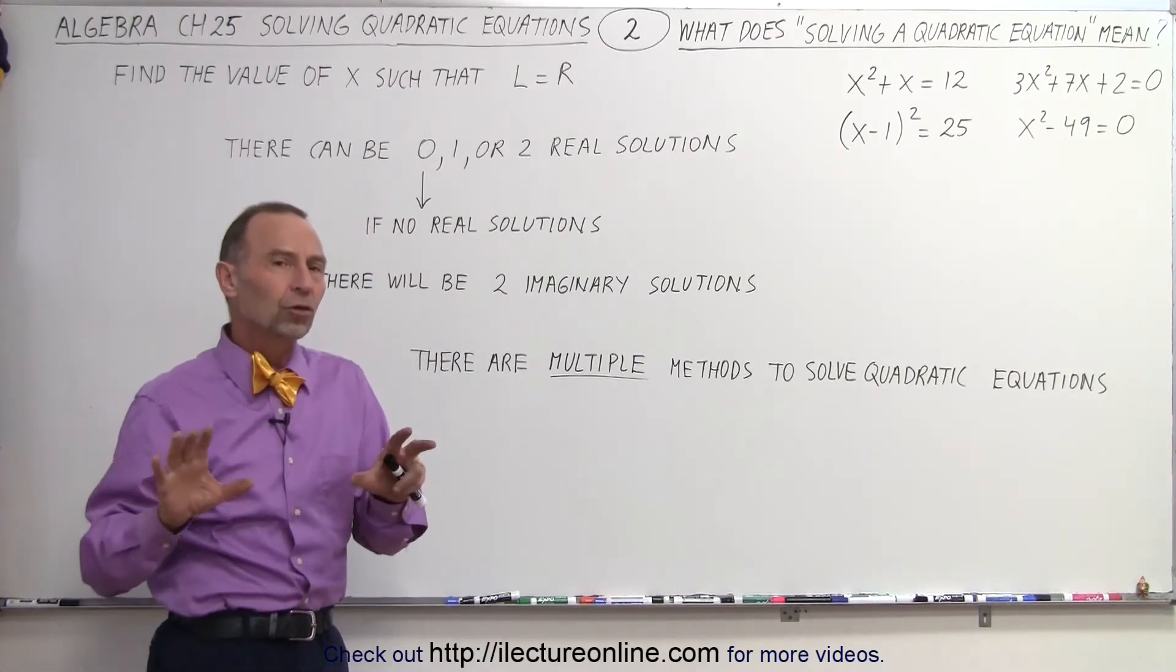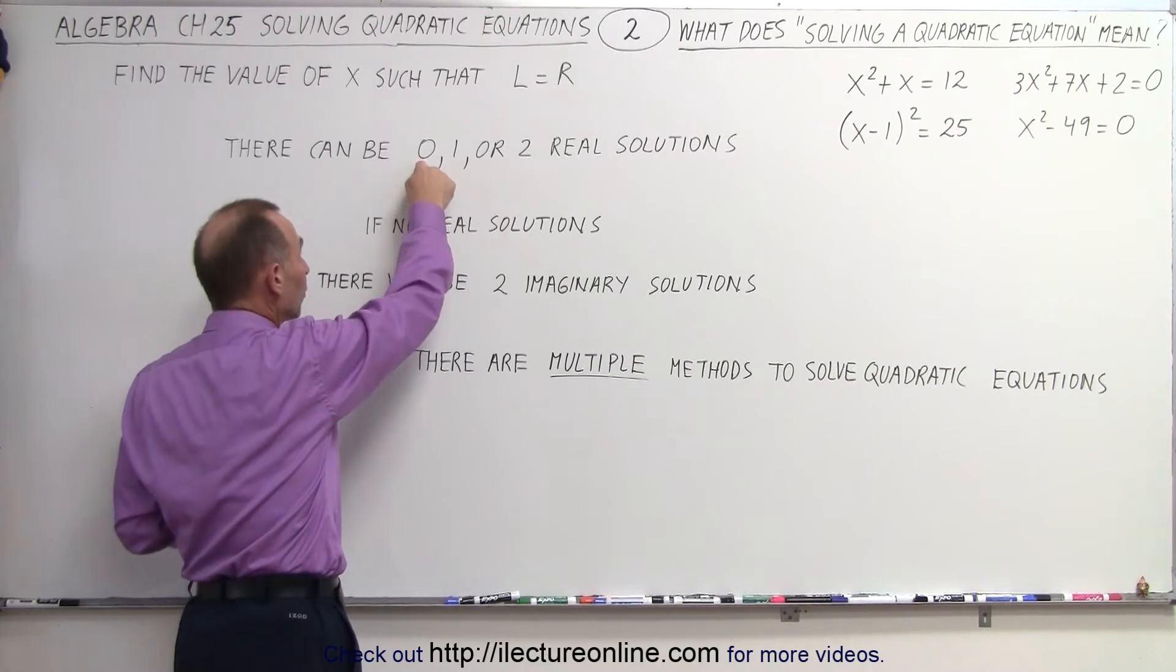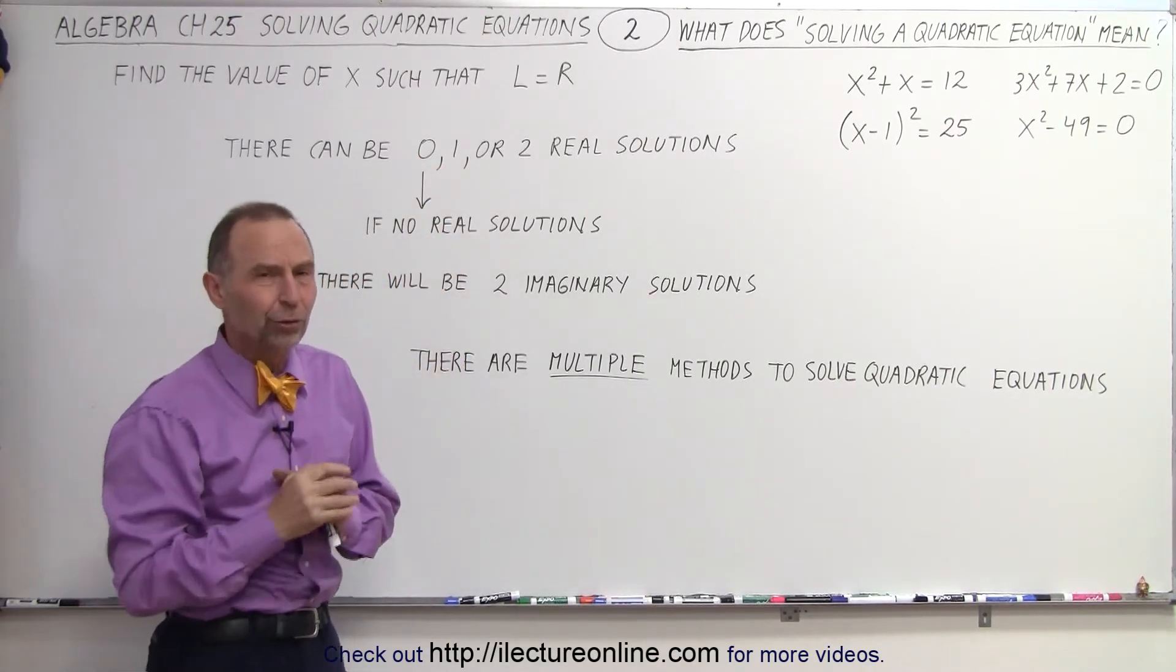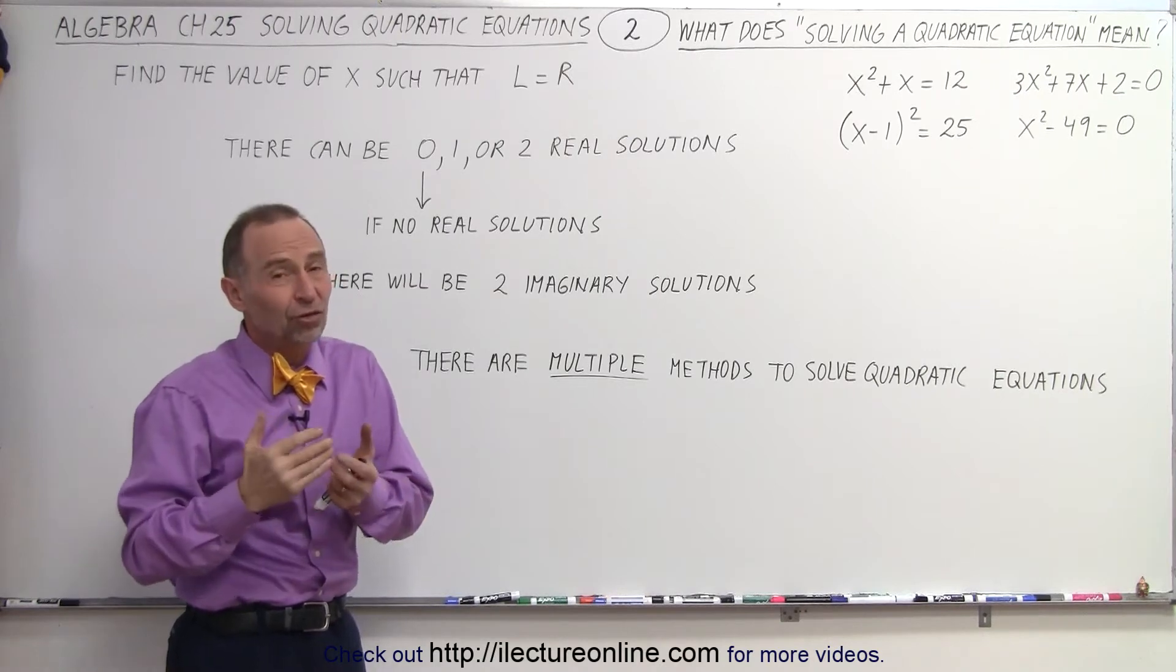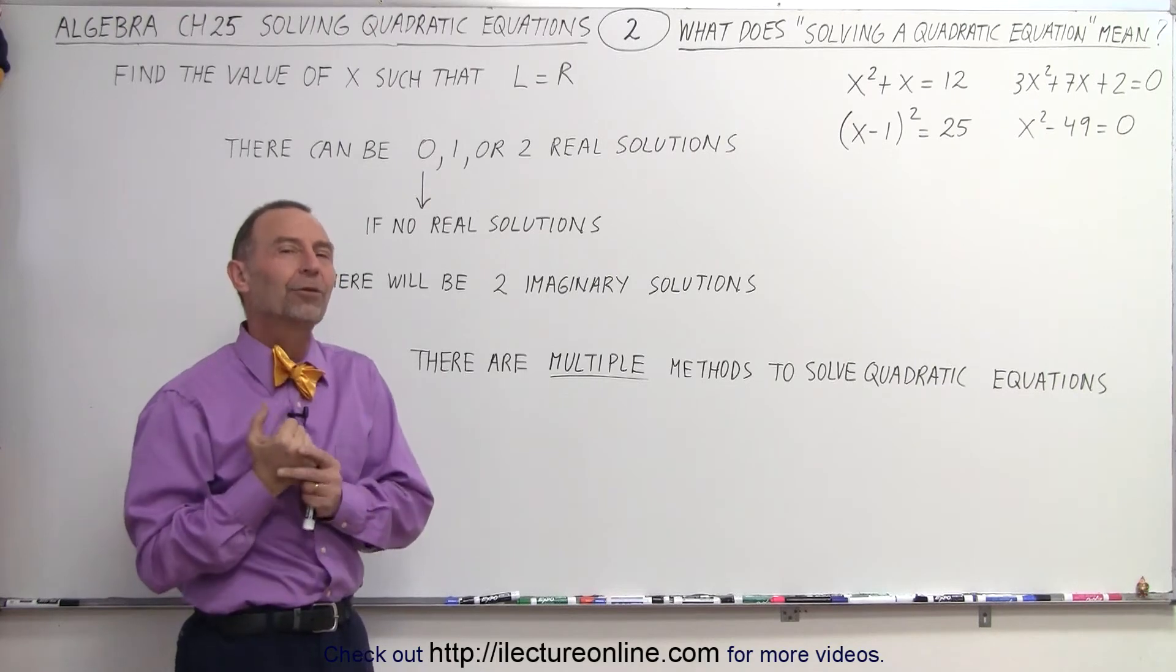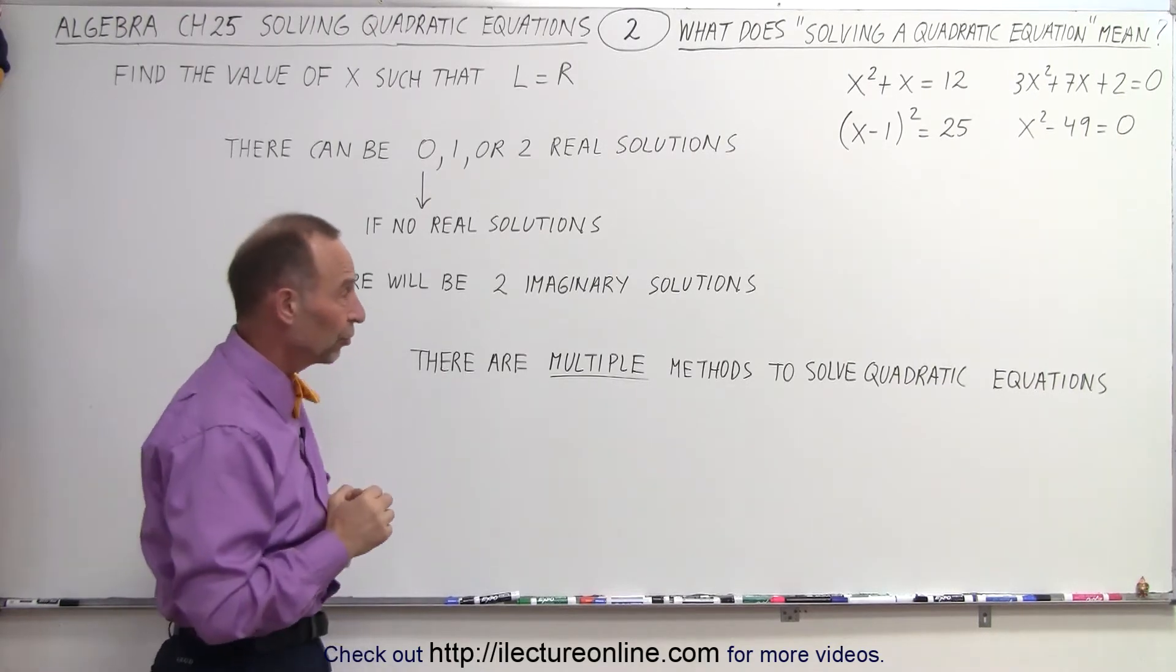And if there's no real solution, if the result is that there's zero real solutions, then there will be two imaginary solutions. Imaginary solutions means it involves the imaginary number i, and so we'll show you how to find those imaginary solutions as well.